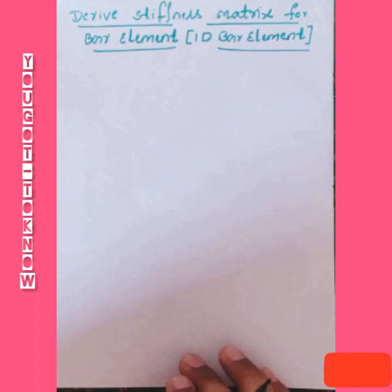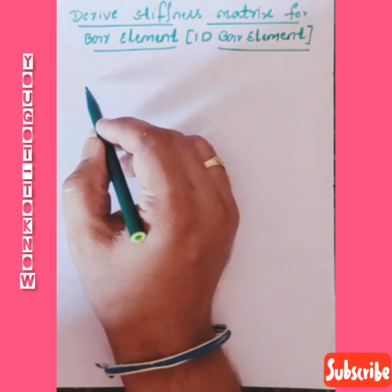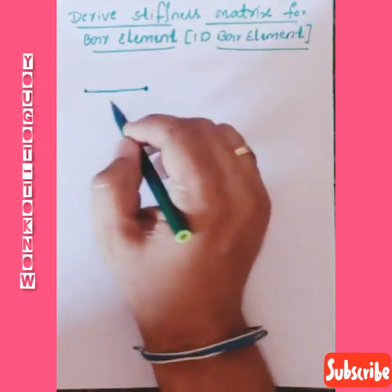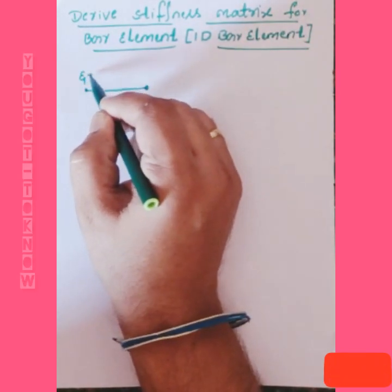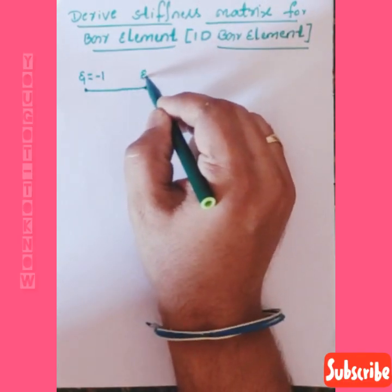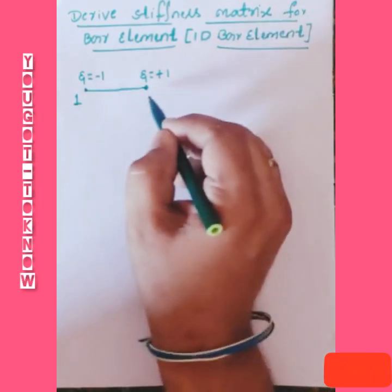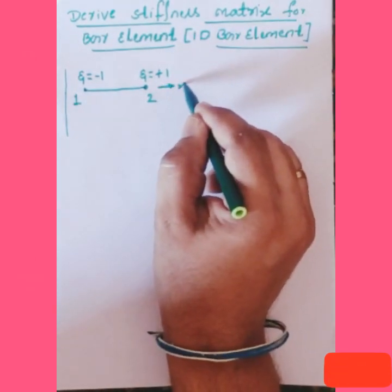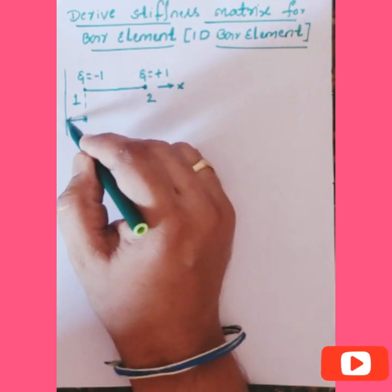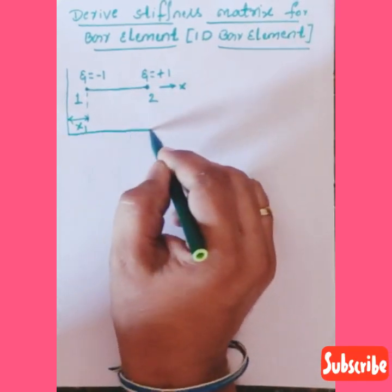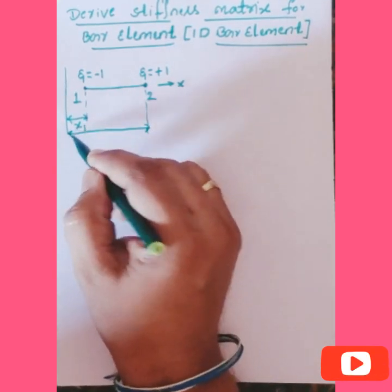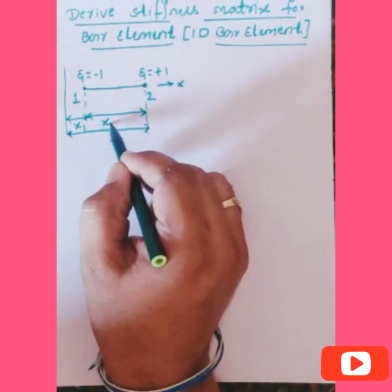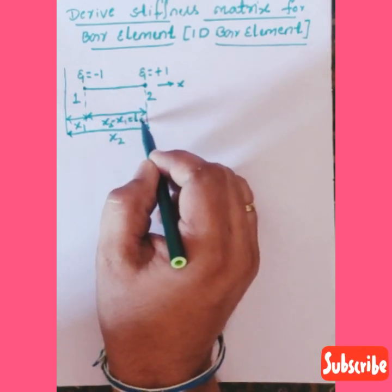To derive the one-dimensional bar element stiffness matrix, we first represent the bar element. We know that a bar element is a two-noded element having one degree of freedom. We represent the natural coordinate system with zeta varying from minus 1 to plus 1, with node 1 and node 2. From the origin, the distance to node 1 is x1, the distance to node 2 is x2, and x2 minus x1 equals the element length le.